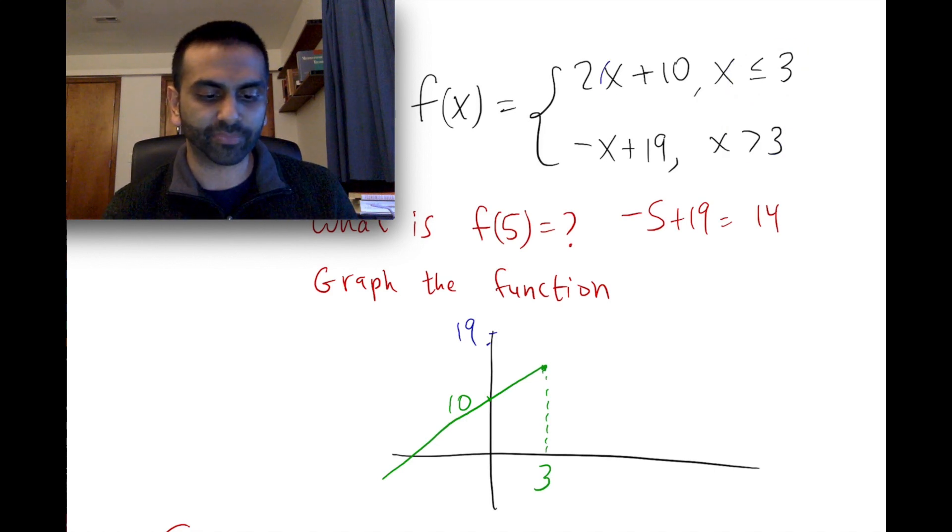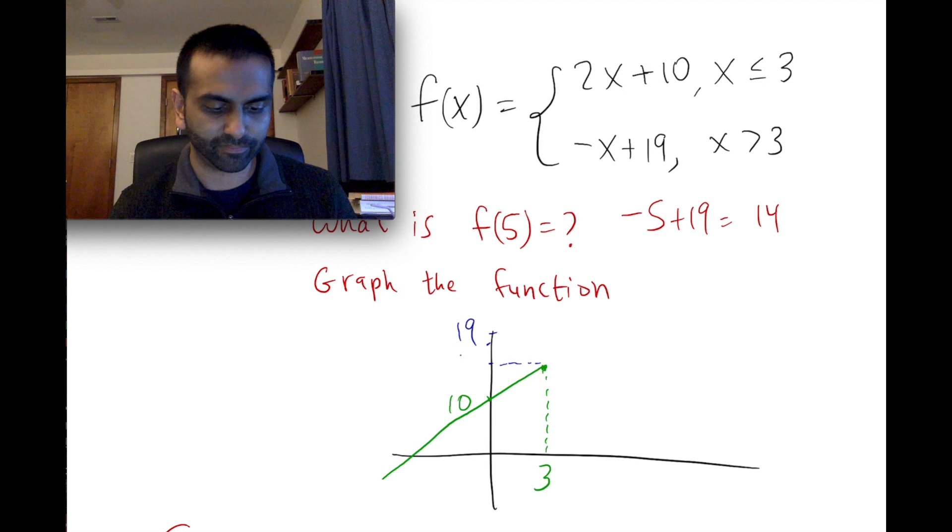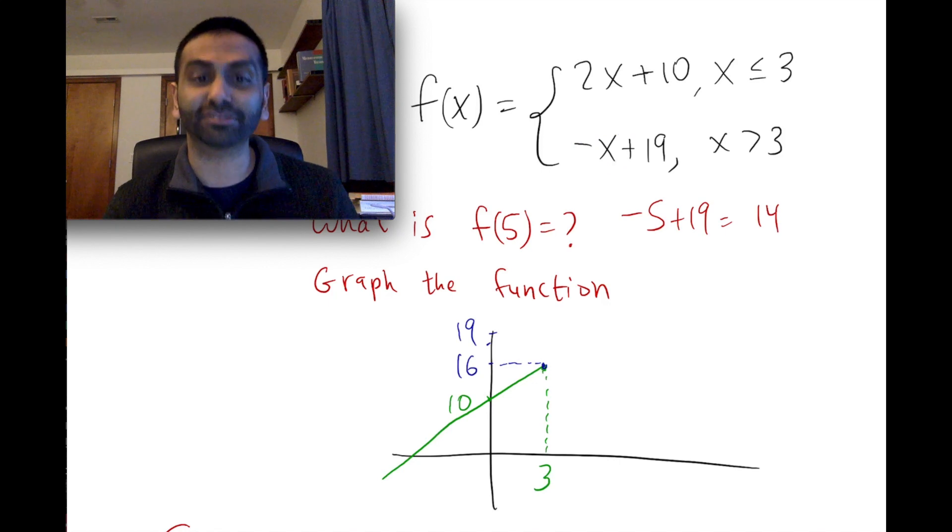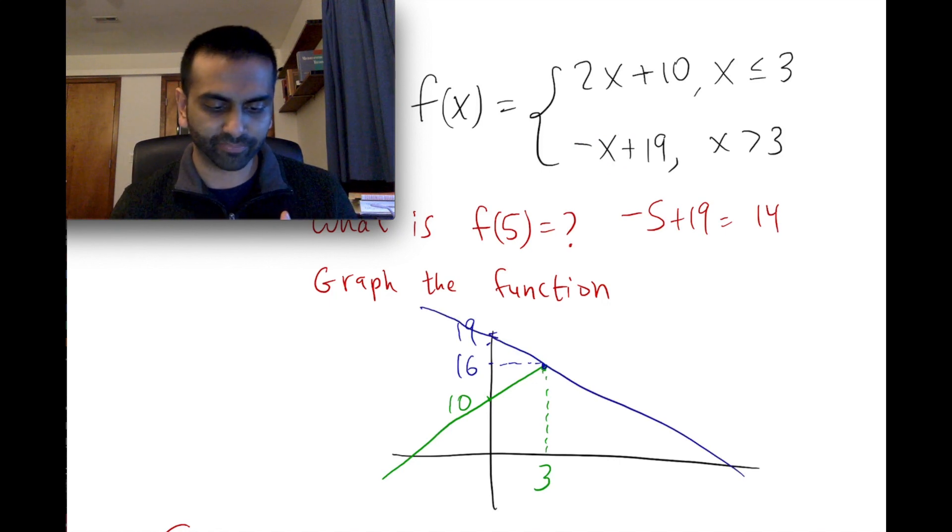So at 3, when you plug in 3 over here, 2 times 3 is 6 plus 10, that's 16. So we know this function is at 16, 3 comma 16. This other function at 3, negative 3 plus 19 is also 16. So this downward sloping blue function...